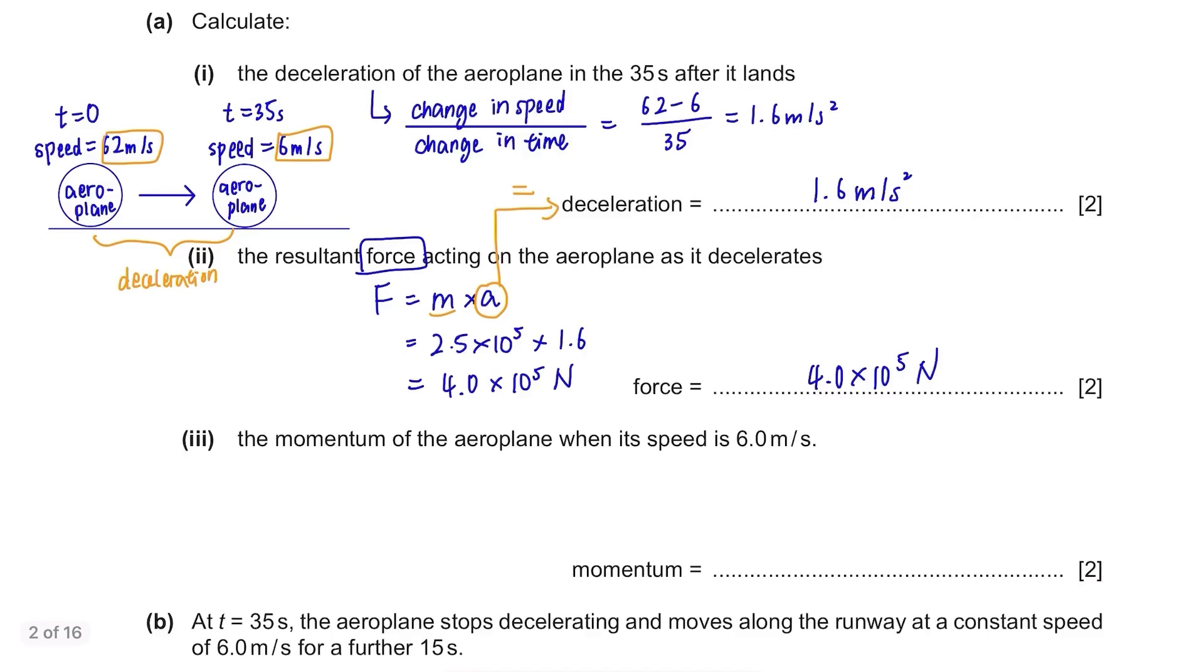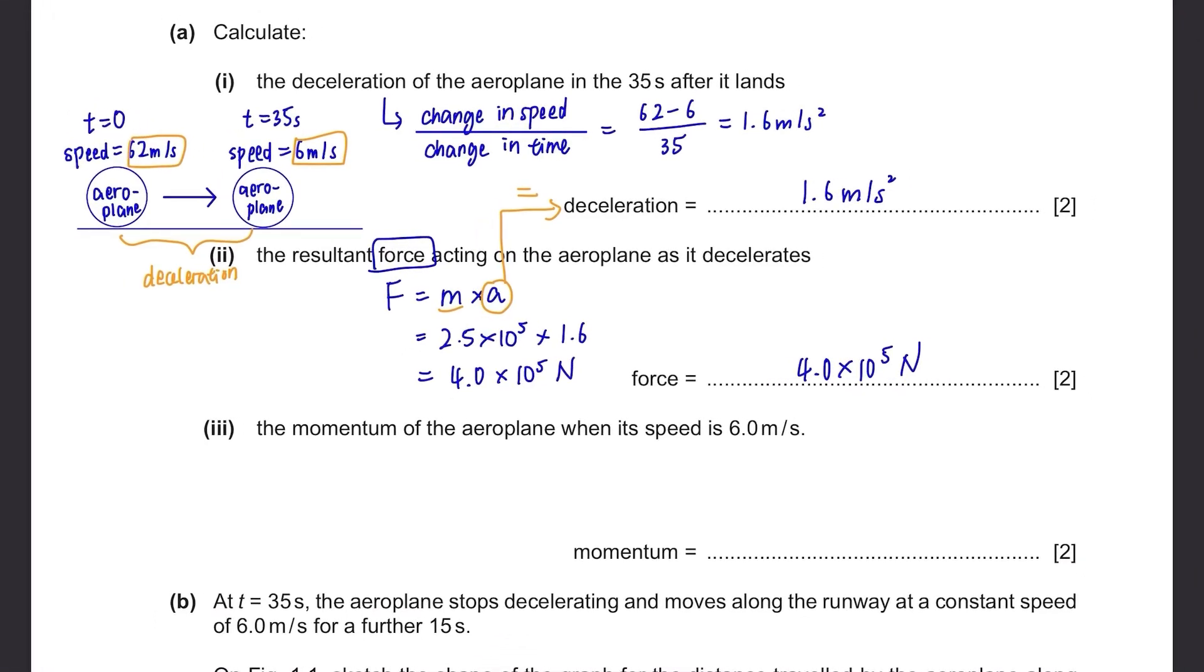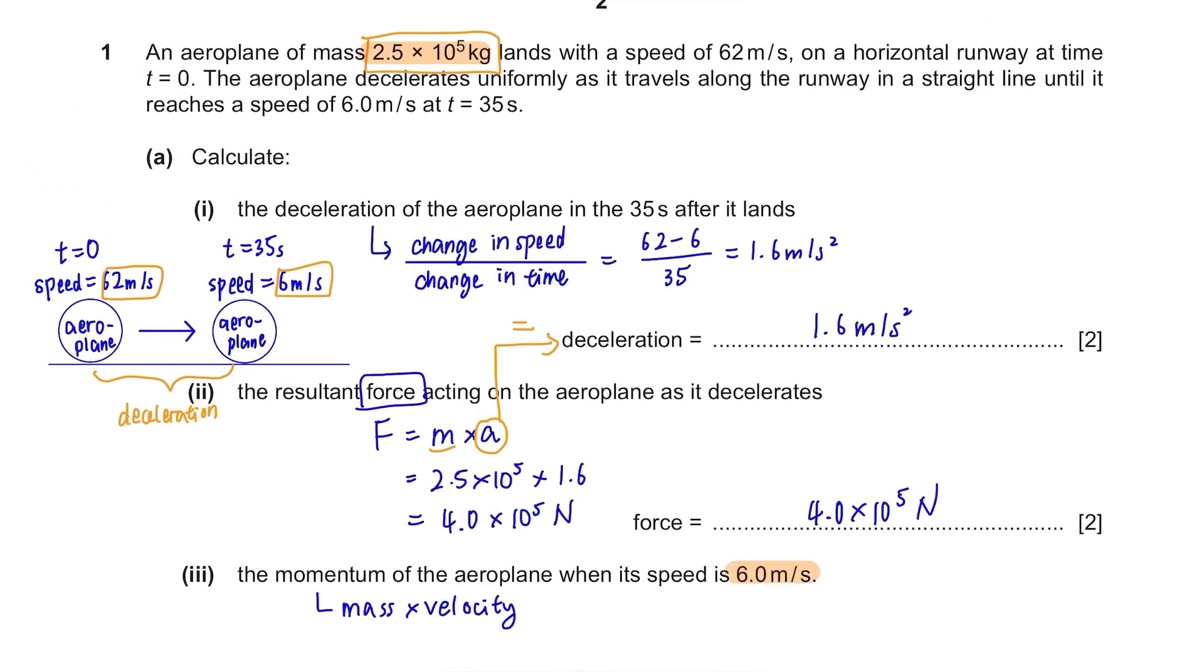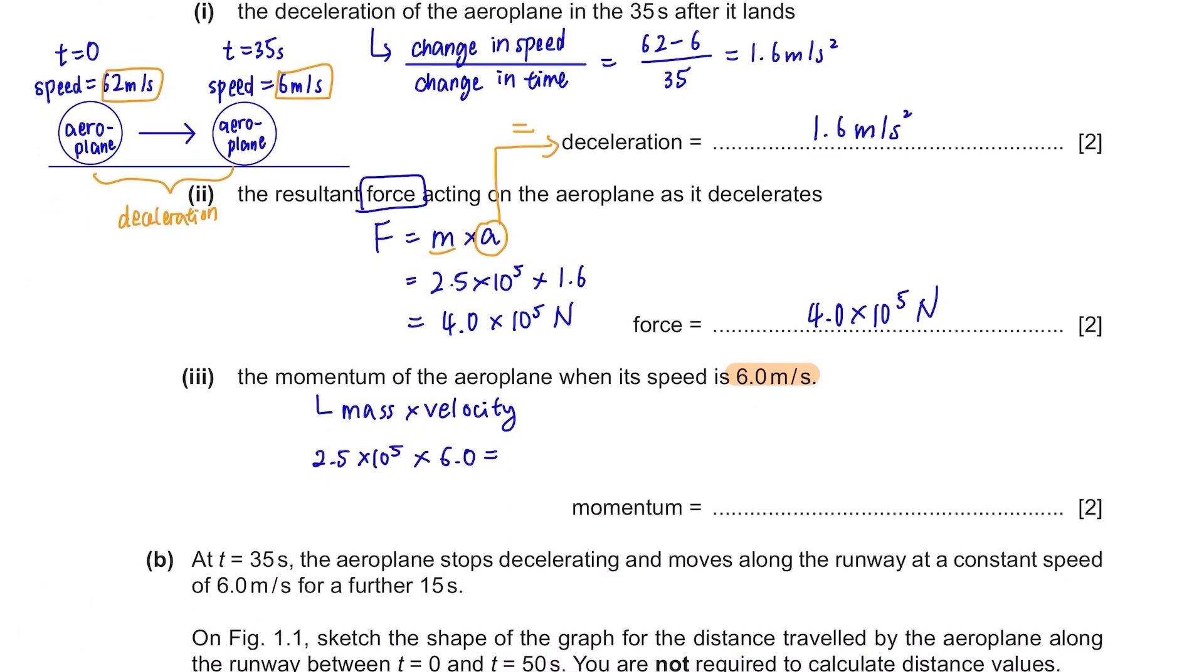The momentum of the aeroplane when its speed is 6.0 m per second. The equation to calculate momentum is mass times velocity. Mass is here and speed is 6 so just multiply them together.